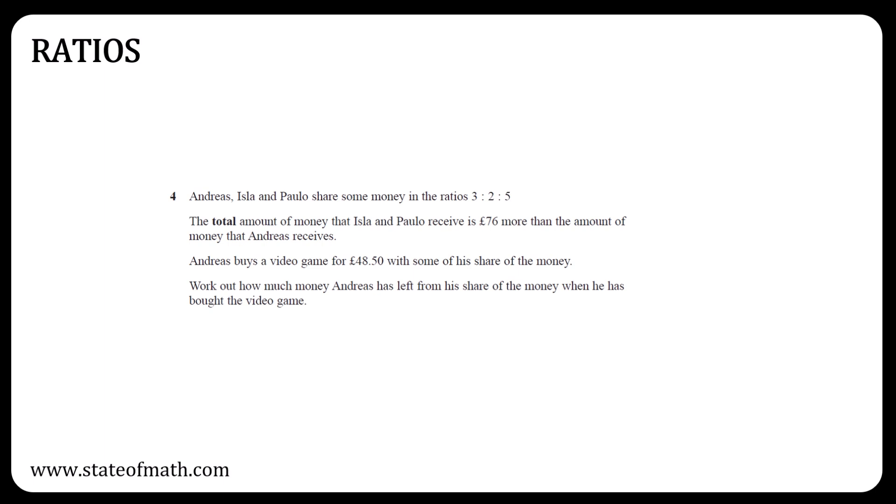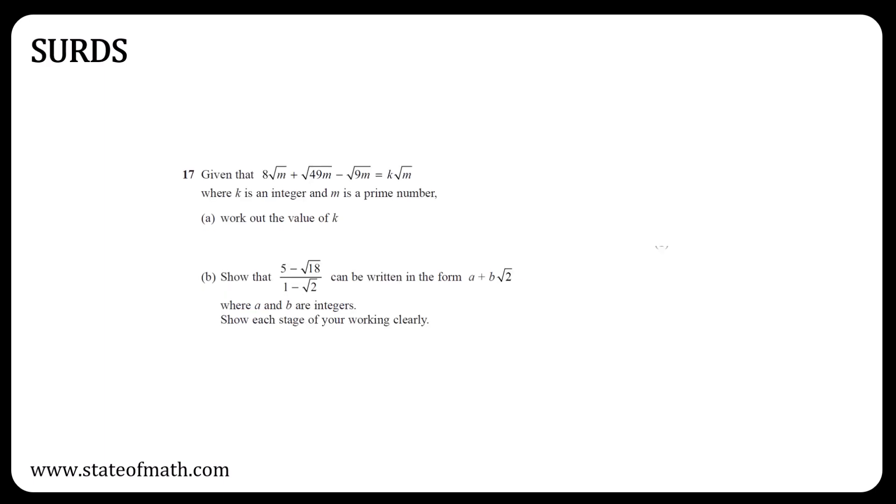No ratio question in Paper 1 HR, so a must revise topic for Paper 2 HR. Another must revise topic is surds. This could involve simplifying an expression or rationalizing the denominator, or both like in this case.